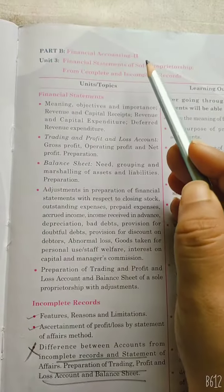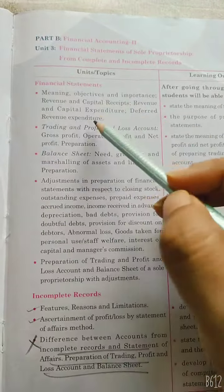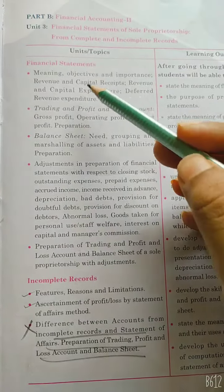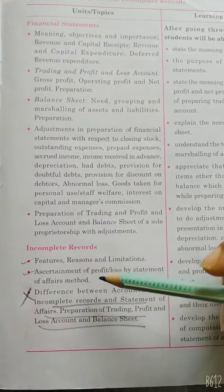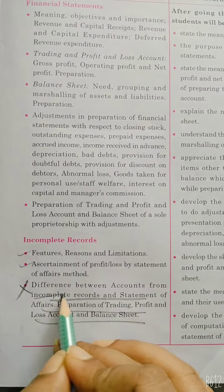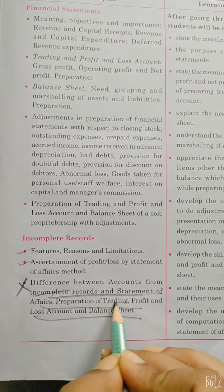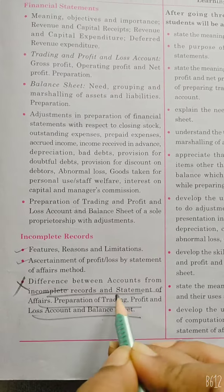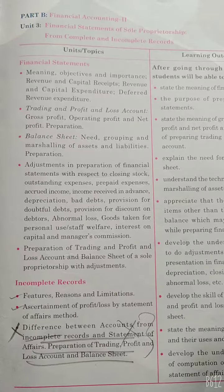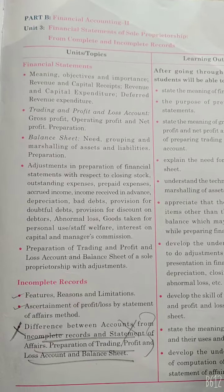Now in Part B, Financial Accounting, the third unit — there is no change in Financial Statements. Coming to Incomplete Records, the topics of Statement of Affairs and Preparation of Trading and Profit and Loss have been removed.